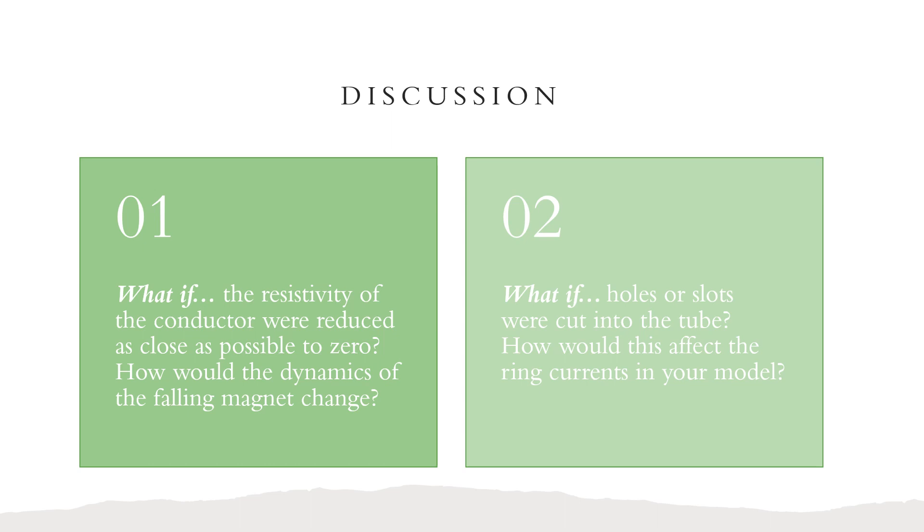Discussion. What if the resistivity of the conductor were reduced as close as possible to zero, how would the dynamics of the falling magnet change? If this were true, the induced current in the loops would be much greater than before and would create a much greater force on the magnet as well. It could even possibly counteract the gravitational force altogether.